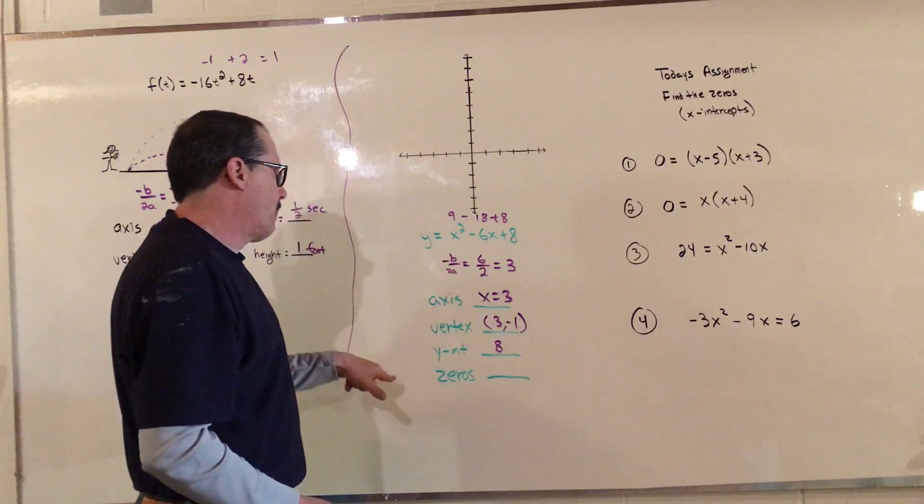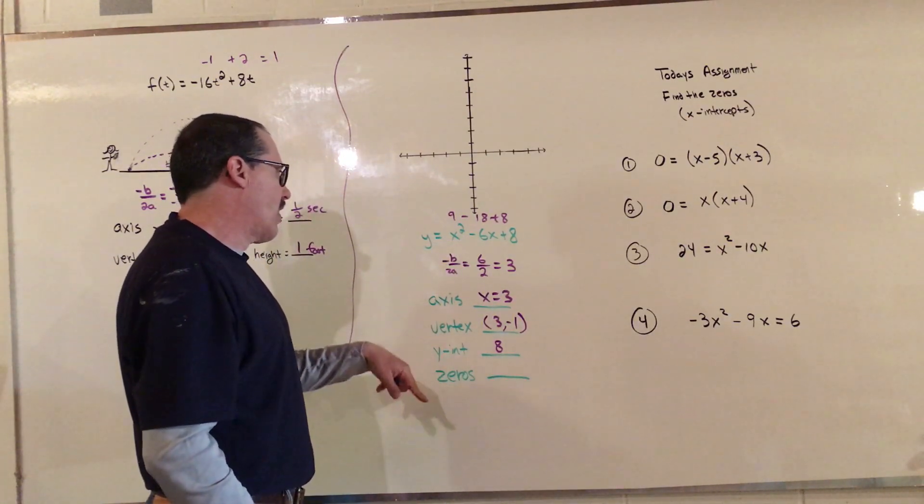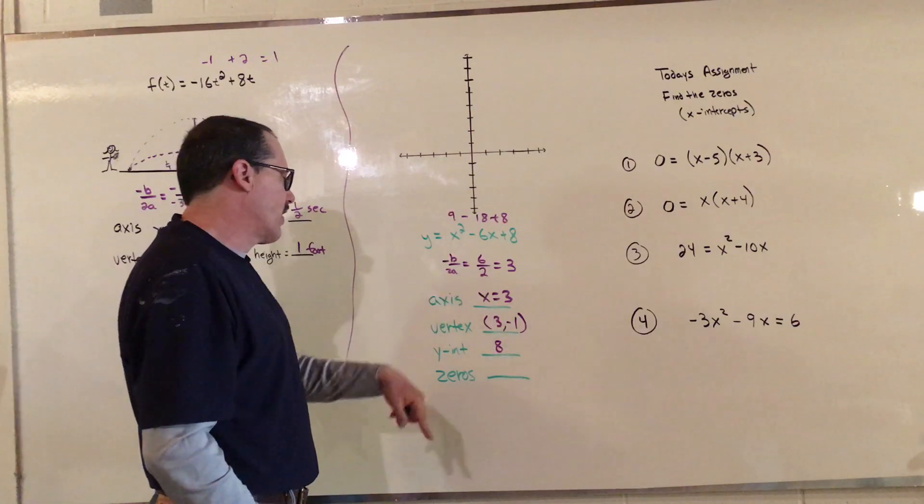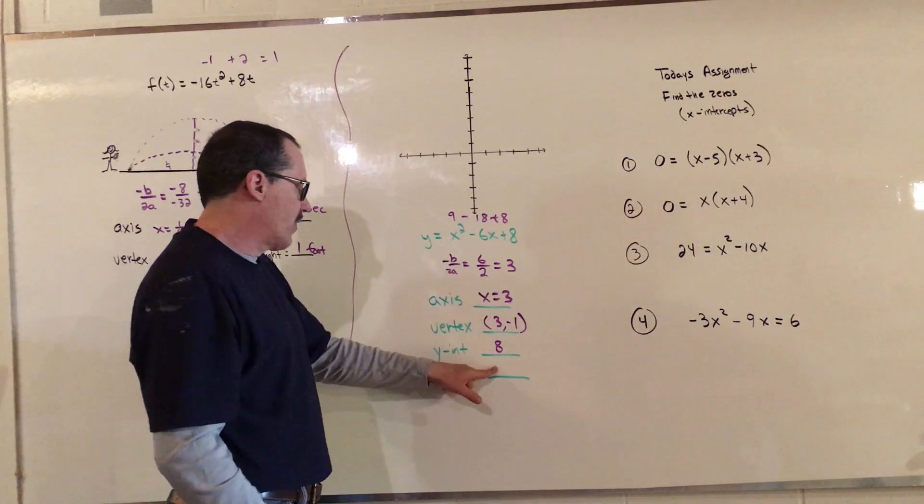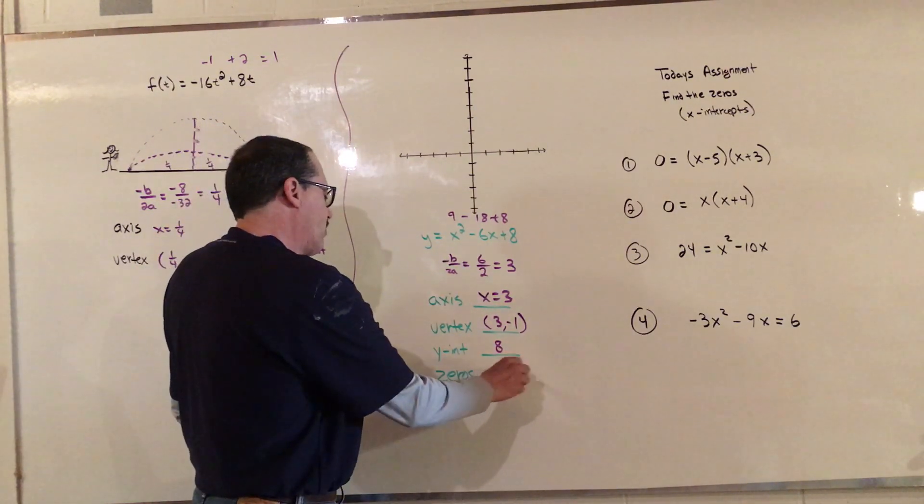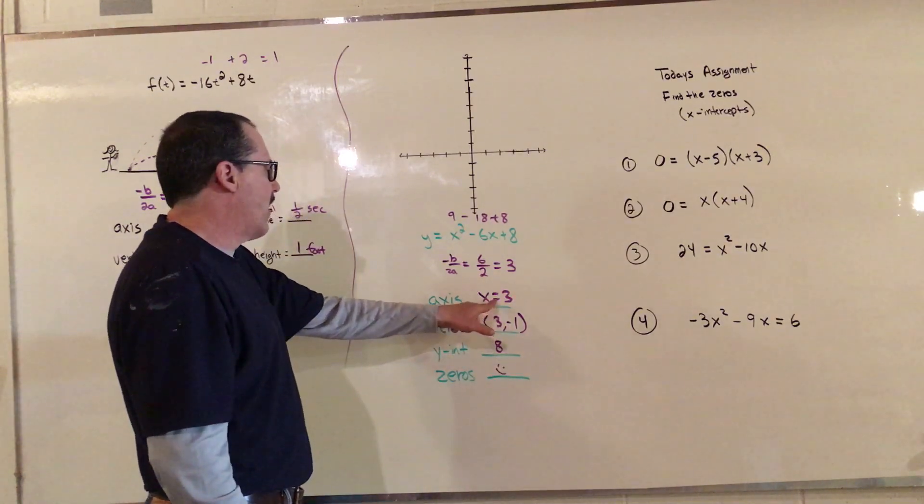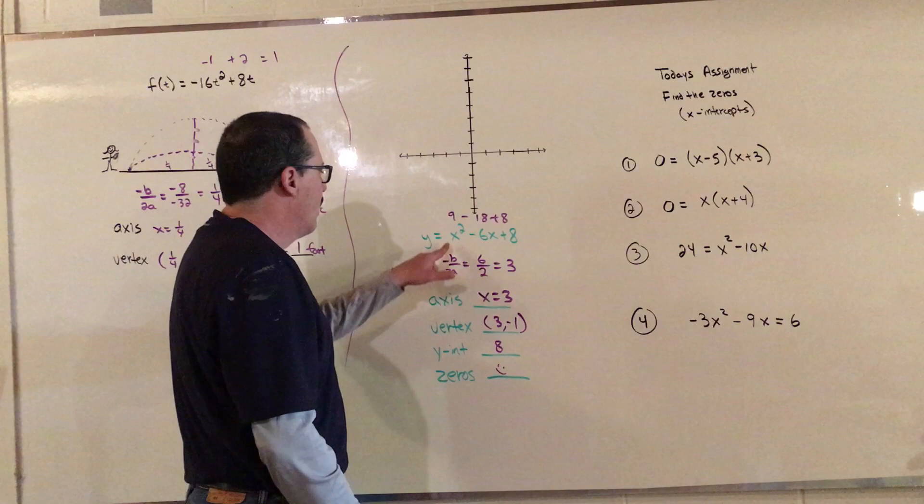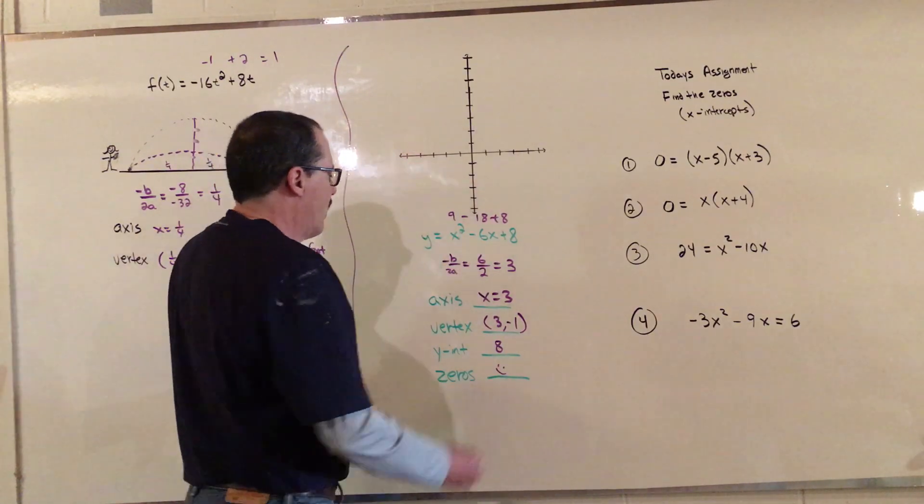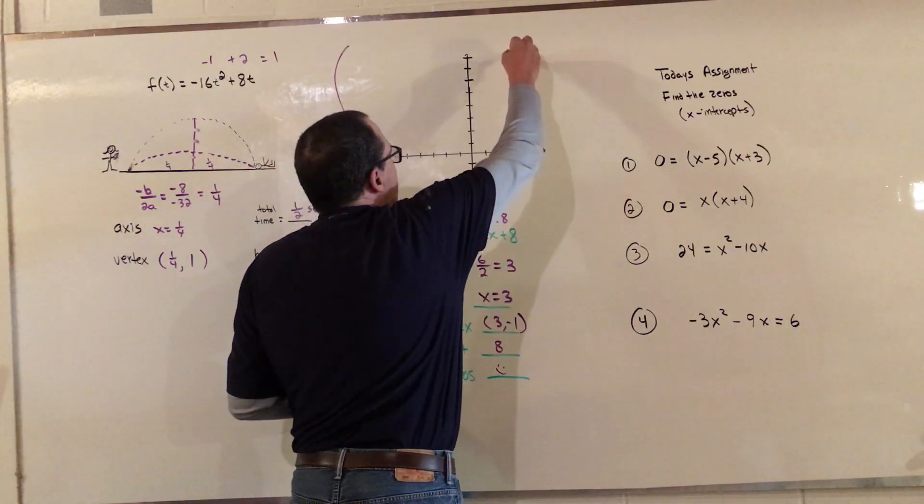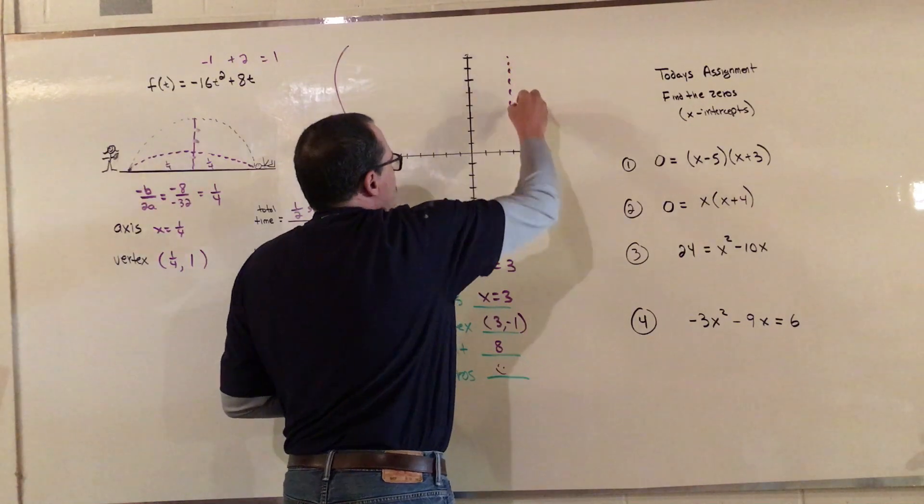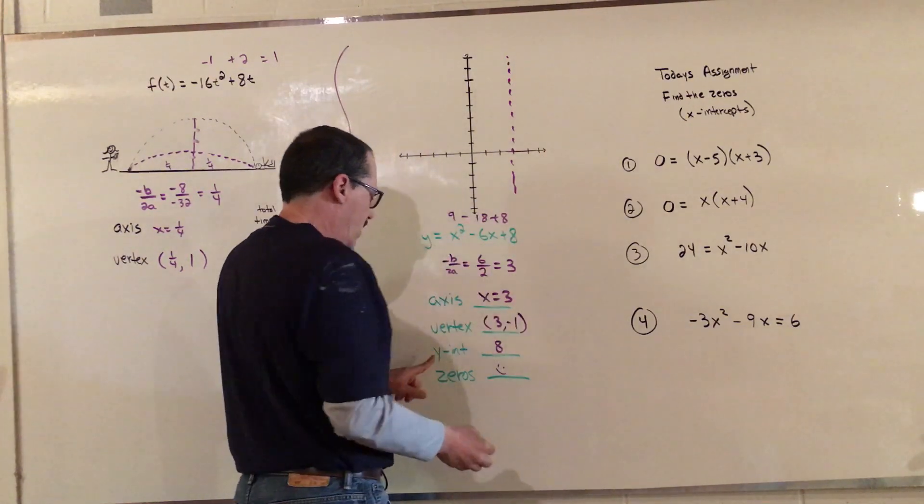My zeros, now the zeros are where it crosses the x-axis and that's what we're going to get today. So we're actually going to wait on this one here until we do a little bit more work. But here the axis is x equals 3. This is positive, so I know it goes up. I'm going to put my dotted line in.